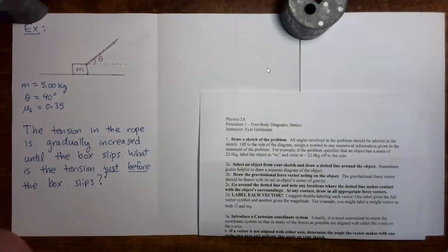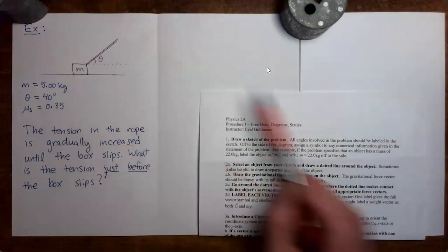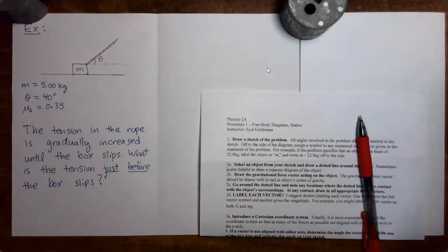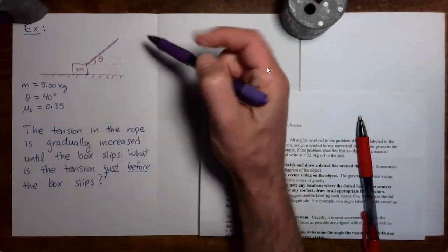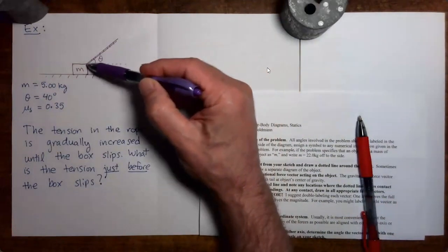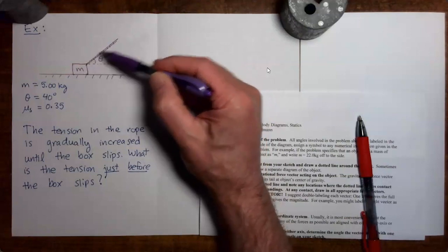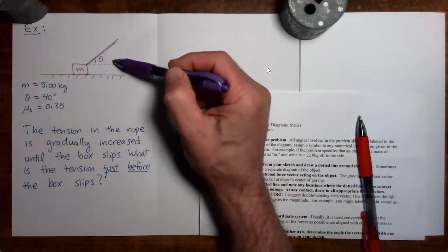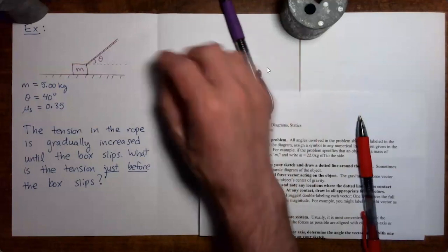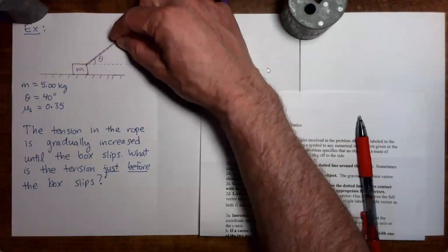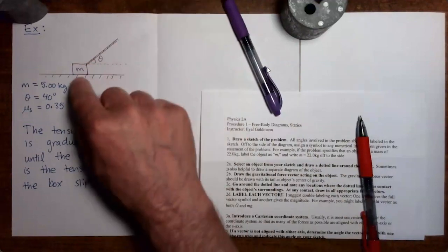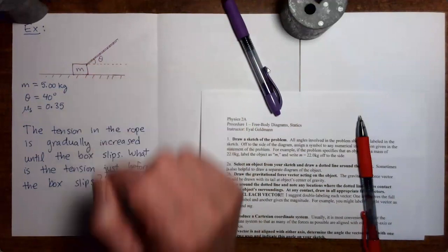In this video we're going to be doing a second example problem involving static friction. We have a mass moving on a horizontal surface — hash marks indicate a frictional surface. A rope is connected to the mass, oriented 40 degrees above the horizontal. Whoever is pulling the rope is going to gradually pull harder and harder until the mass begins to slip along the floor.